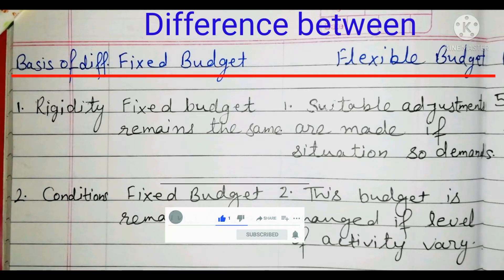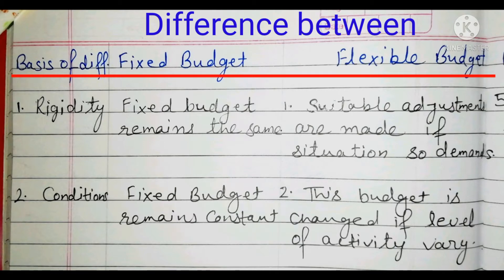Hello students, today's topic is: what is the difference between fixed budget and flexible budget? So let's start today's video. Here you can see that we have three columns. The first column is basis of difference, the second is fixed budget, and the next is flexible budget.